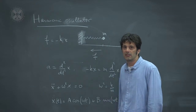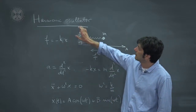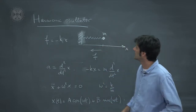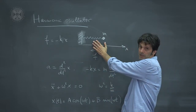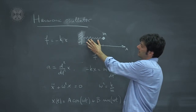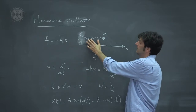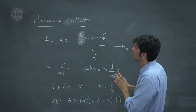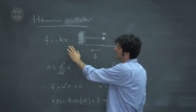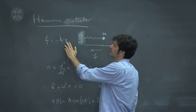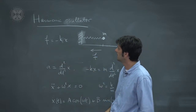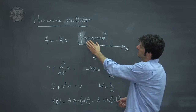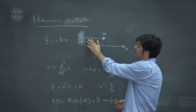The next thing we want to discuss is the harmonic oscillator. The simplest example is a point particle in one dimension attached to a spring. We are in only one dimension, so there are no vectors involved. The state of the system is described by a single number — the position of the particle — and the force acting on the system is the force due to the spring.